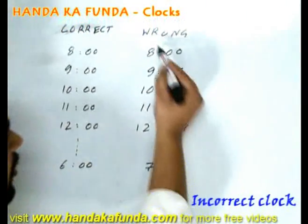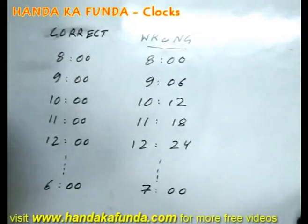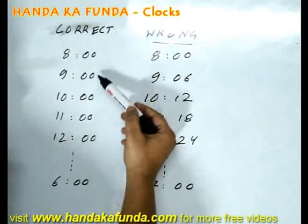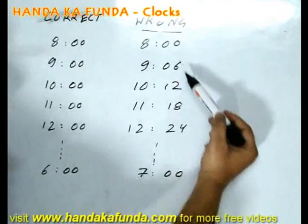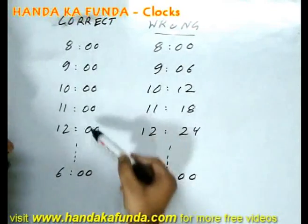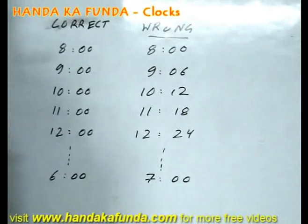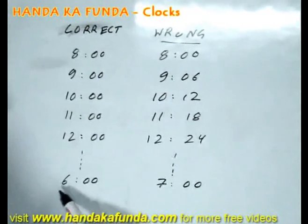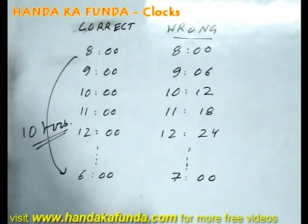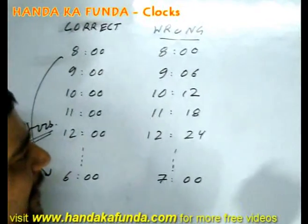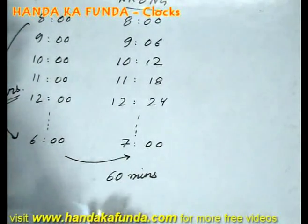Let's say we have a wrong clock that gains 6 minutes every hour — when the correct clock moves 1 hour, it moves 1 hour and 6 extra minutes. So when the correct clock goes from 8 to 9, the wrong clock shows 9:06. In 2 hours it gains 12 extra minutes. In 4 hours, at 12 o'clock, it would have gained 24 extra minutes and show 12:24. At 6 o'clock — 10 hours elapsed — it has gained 60 minutes, so it will show 7 o'clock.